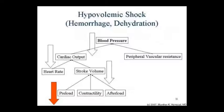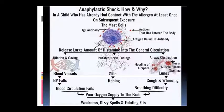Hypovolemic shock jo hemorrhage aur dehydration ki wajah se dikhai deta hai - BP kum ho jata hai, cardiac output kum ho jata hai, peripheral resistance badh jaayega, heart rate badh jaayegi, stroke volume kum ho jaayega, preload kum ho jaayega. Anaphylactic shock mein jab antigen aata hai to degranulation hongi, degranulation se chemicals release honge aur histamine jaise chemicals release hote dikhai denge - jis se ki blood vessels dilate kar dega, oozing hone lag jaayega, blood circulation fail ho jaayega. Irritated nerve endings ki wajah se skin mein itching hone lag jaayegi, airway obstruction ki wajah se air spaces flooding - mucus bahne lag jaata hai.